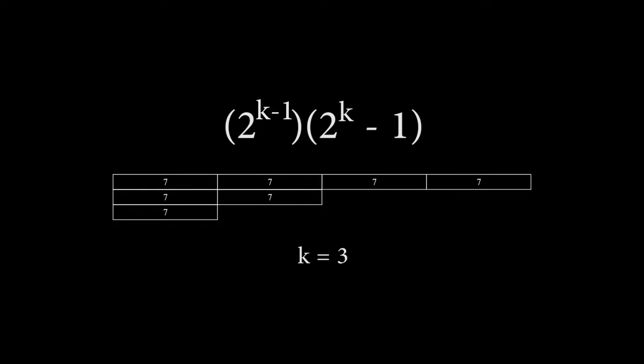This means that we will always be able to divide the perfect number in half exactly k-1 times. In this case, k is equal to 3, so we can produce two additional rows, each of which is a factor of 28 that we got by dividing by 2.